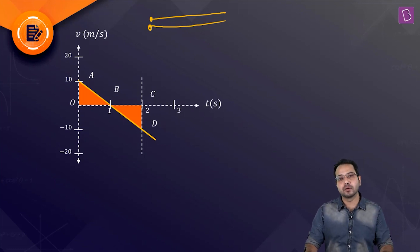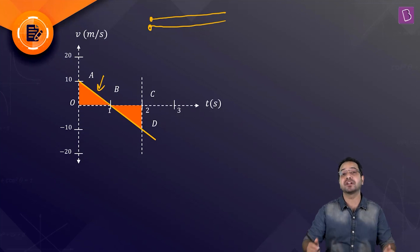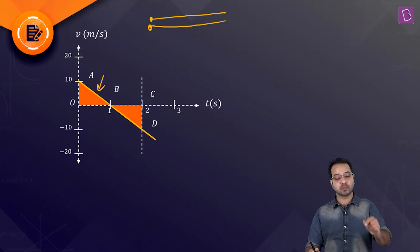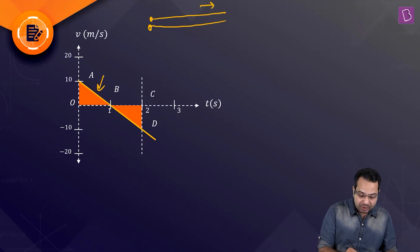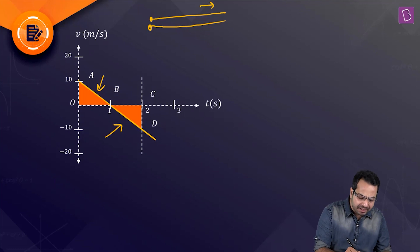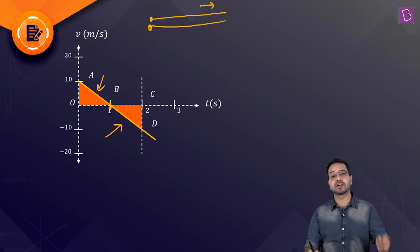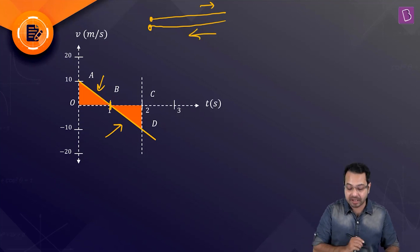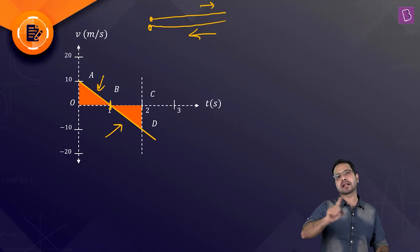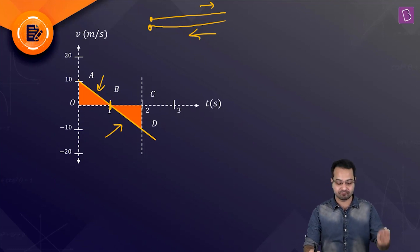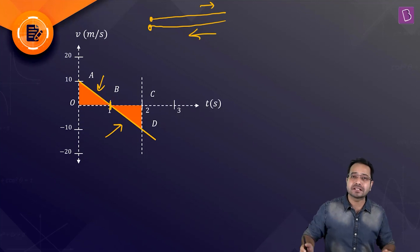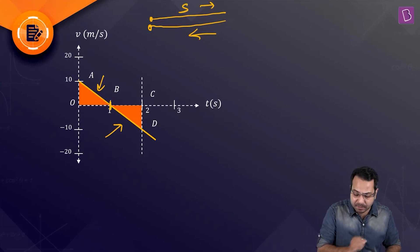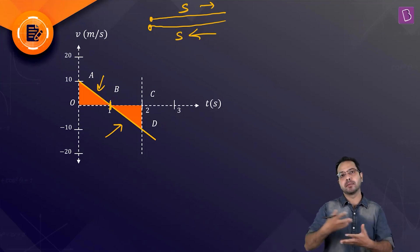The direction of velocity gives the direction of motion. Here the velocity is positive — it is above the t-axis — so the particle moves in the positive direction. But at t = 1 second the velocity becomes zero, meaning the particle stopped momentarily. After that, the velocity becomes negative, so the particle moves in the opposite direction. Naturally, at some instant it will cross its initial position.